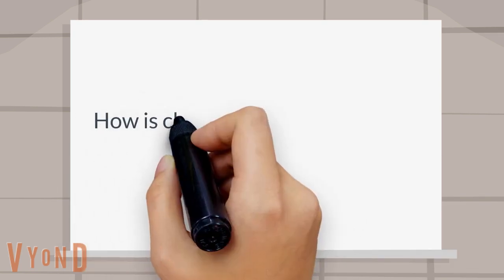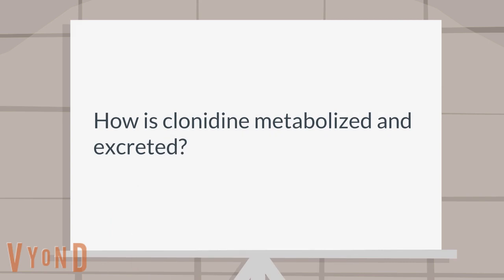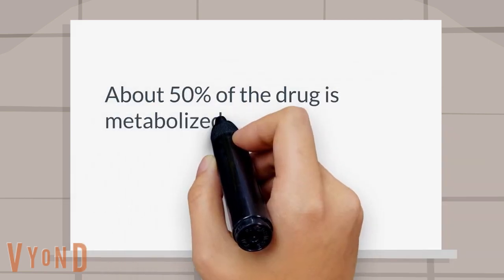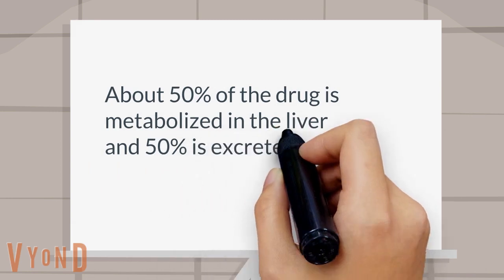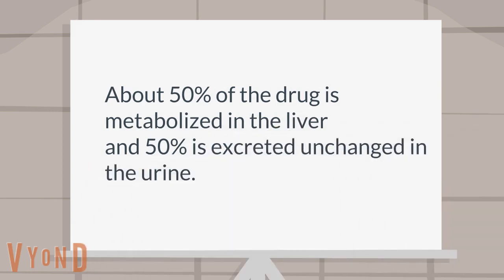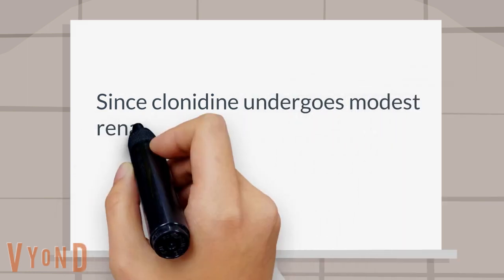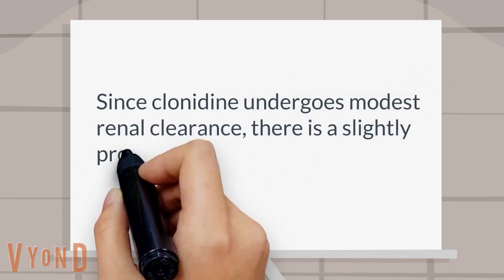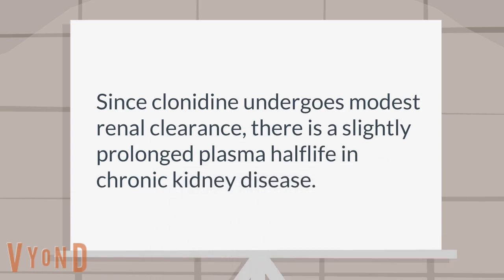How is clonidine metabolized and excreted? About 50% of the drug is metabolized in the liver and 50% is excreted unchanged in the urine. Since clonidine undergoes modest renal clearance, there is a slightly prolonged plasma half-life in chronic kidney disease.